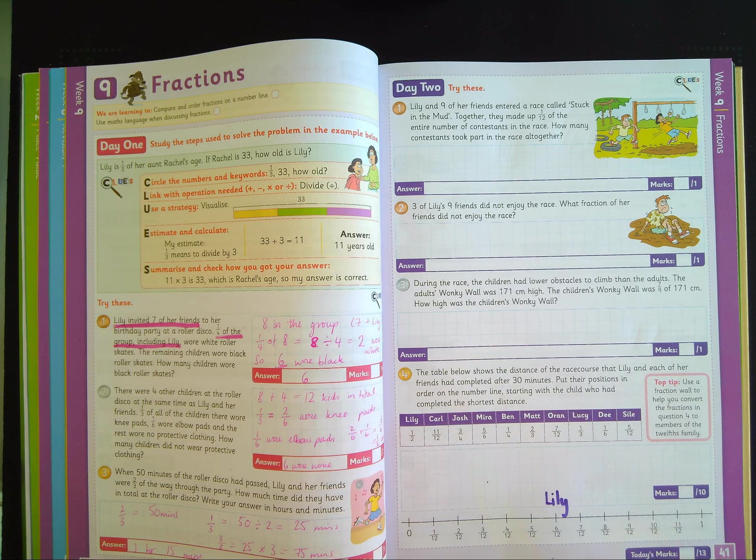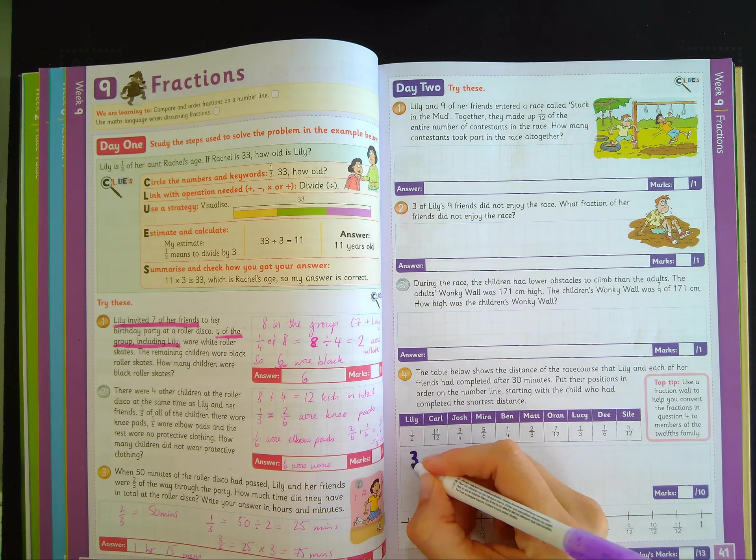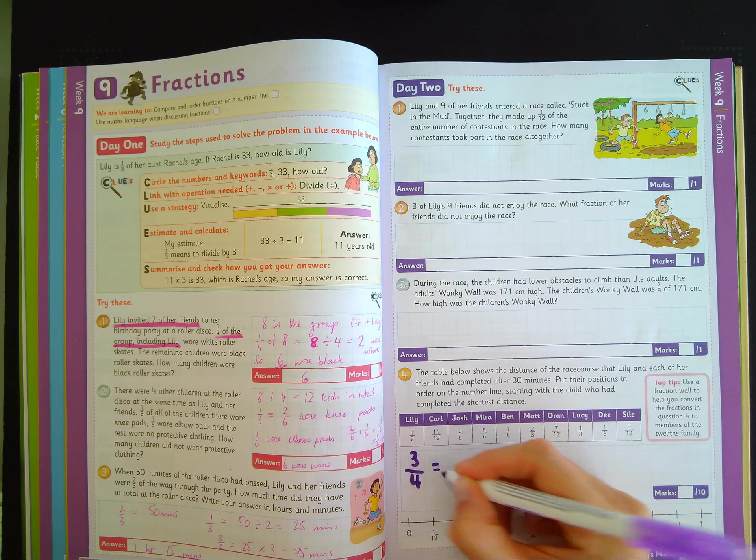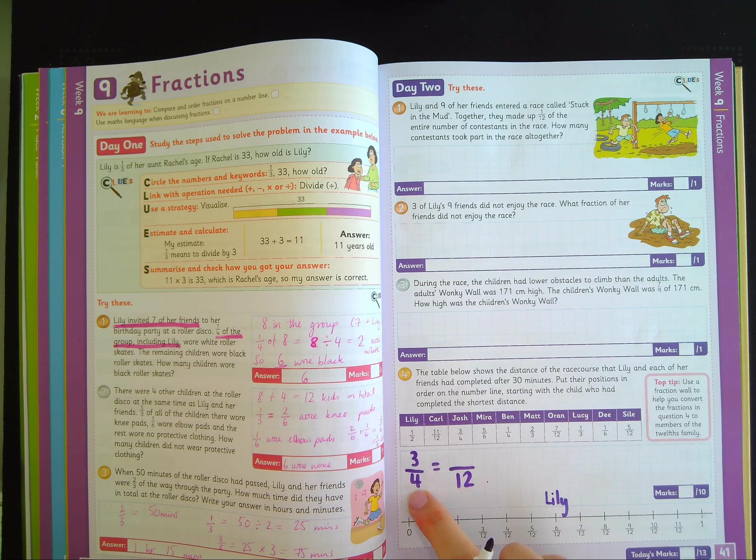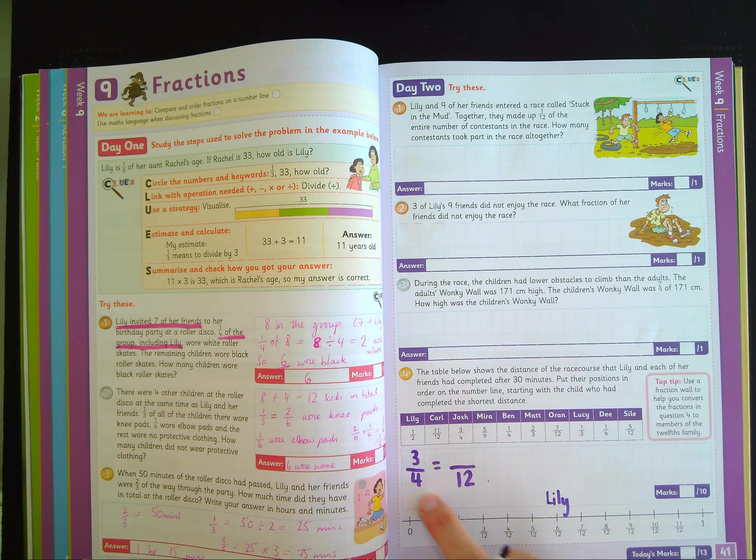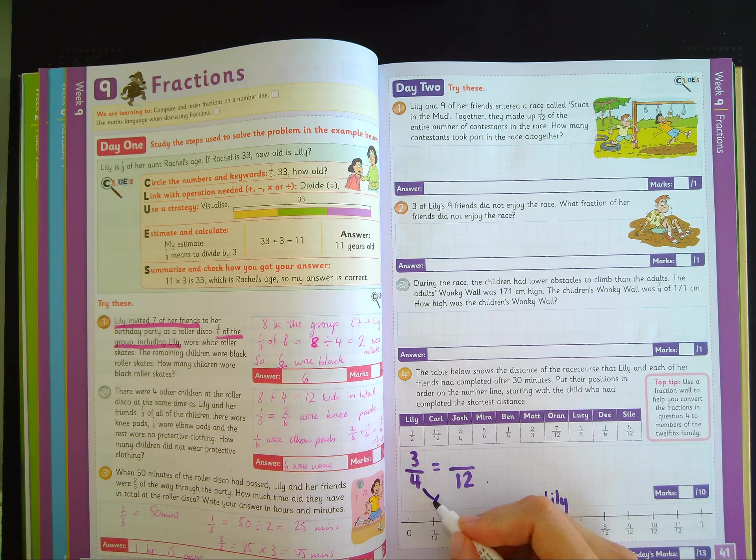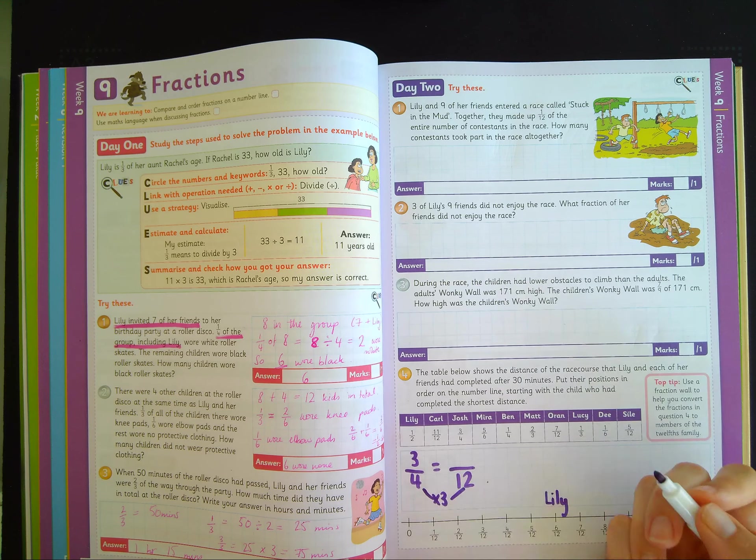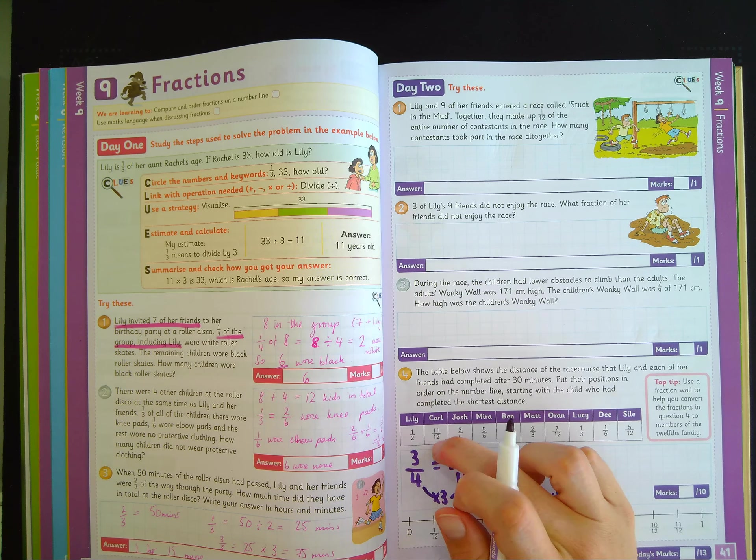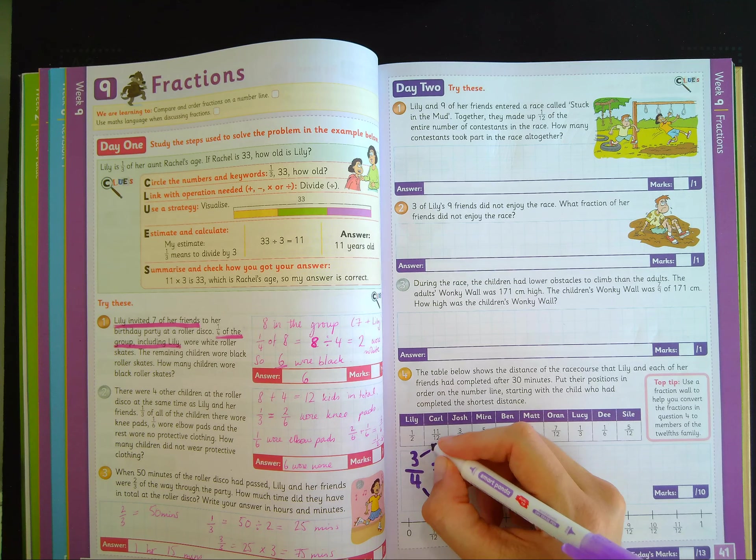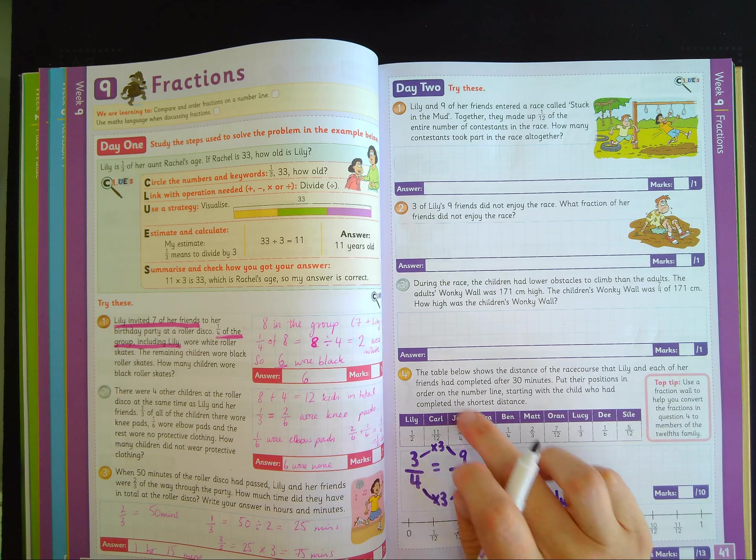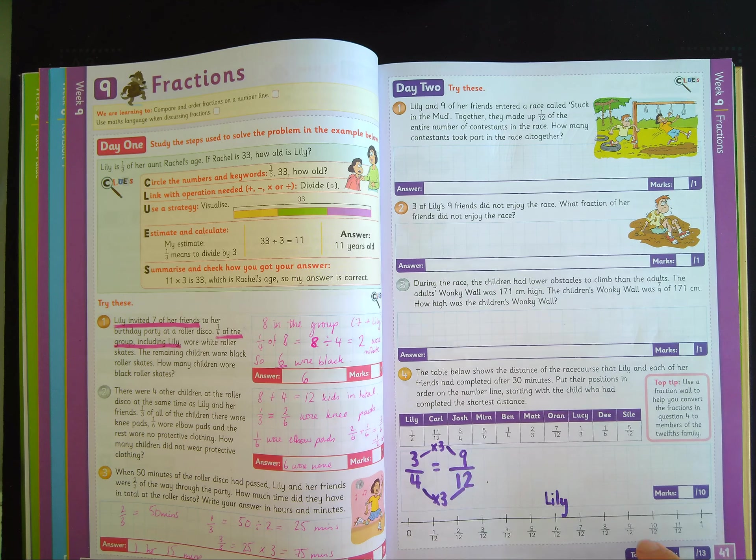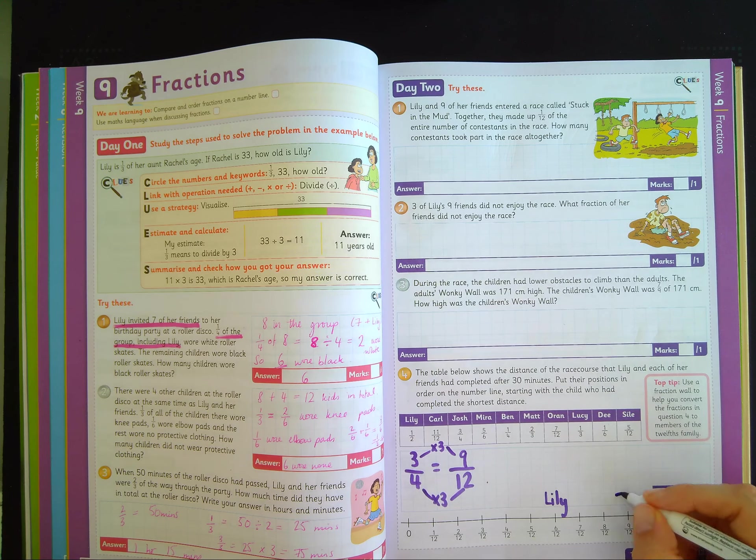Let me take, for example, three-quarters. How could I change that to twelfths? Well, I look at the relationship between the denominators. What do I need to do to four to get to twelve? I multiply it by three. I do the same to the numerator then, so I multiply by three, and I get nine. So three-quarters, Josh, I would write down here at nine twelfths.